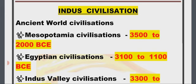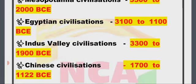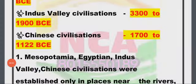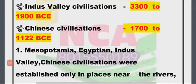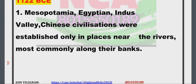In the ancient world, civilizations include: Mesopotamia (3500–2000 BCE), Egyptian civilization (3100–1000 BCE), Indus Valley civilization (3300–1900 BCE), and Chinese civilization (1700–1122 BCE). Point 1: Mesopotamia, Egyptian, Indus Valley, and Chinese civilizations were established only in places near the rivers, most commonly along their banks.